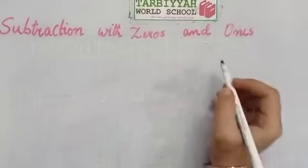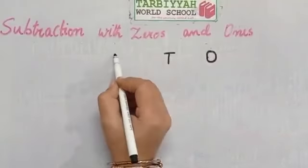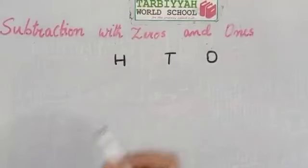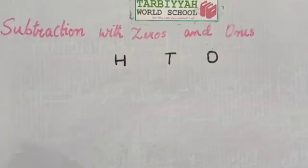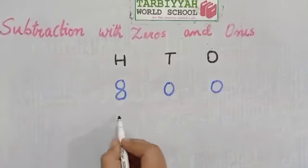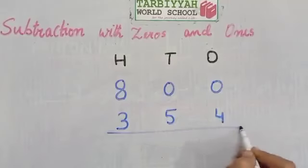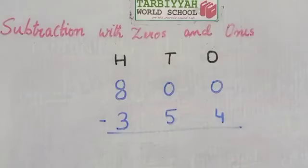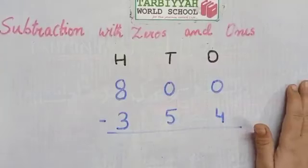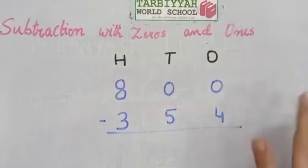First, we write the places: ones, tens, and hundreds. Now we will write the number 800 and 354. Now we will subtract these numbers. When we subtract with zeros and ones, we may need to regroup twice.